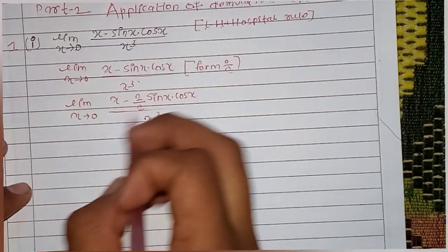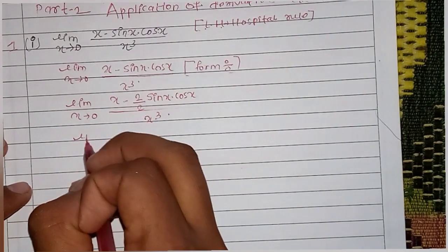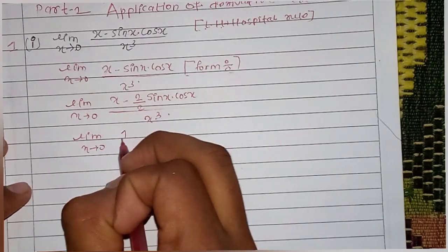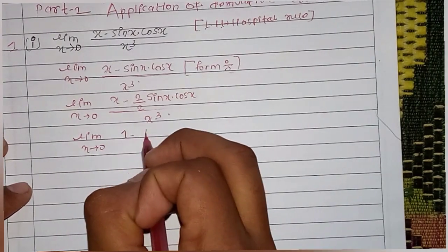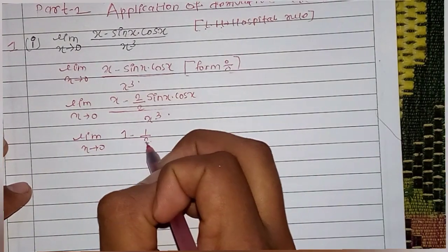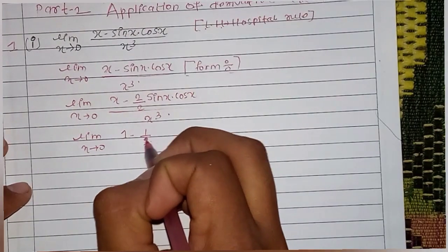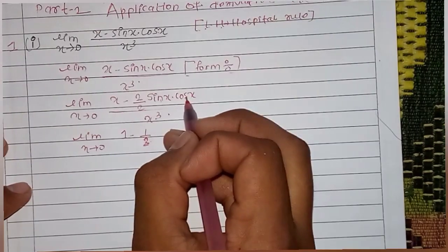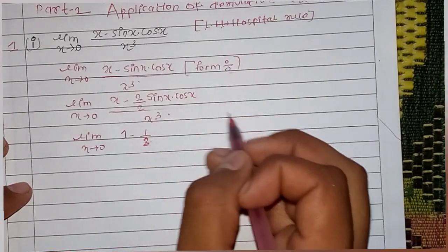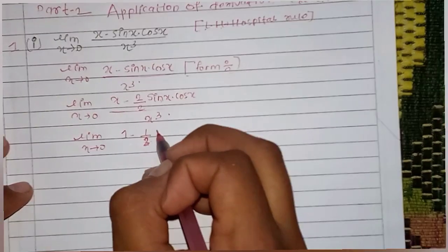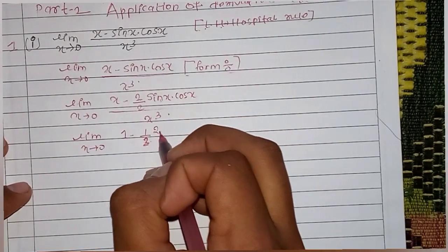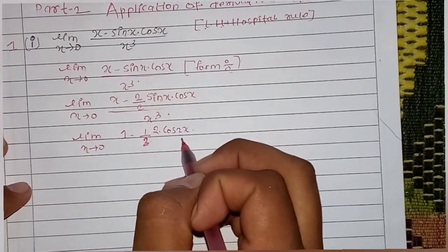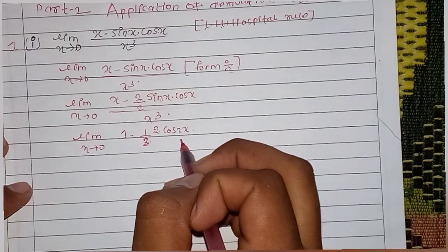Let me just write a derivative. So limit x tends to 0, x derivative 1 minus 1 by 2 — just take this thing — 1 by 2, sin x cos. Now 2 sin x cos is sin 2x, so sin 2x derivative is 2 cos 2x. So cos 2x, cos 2x.